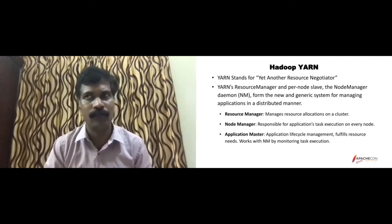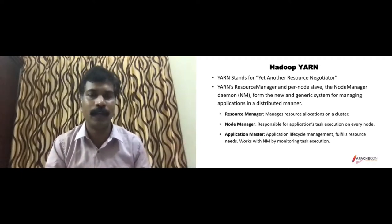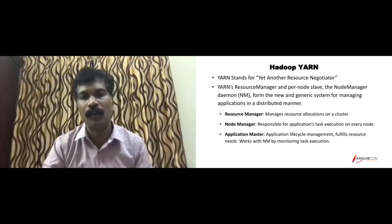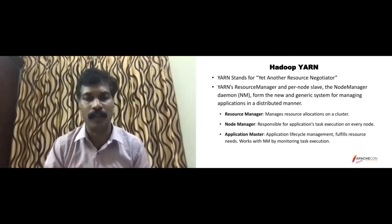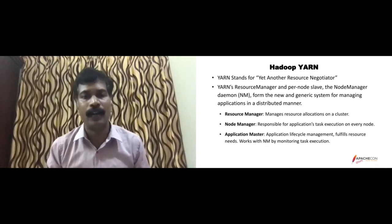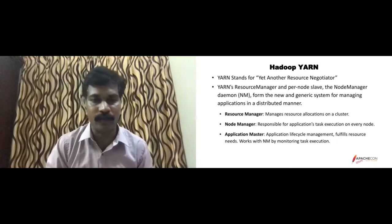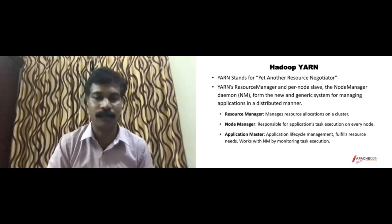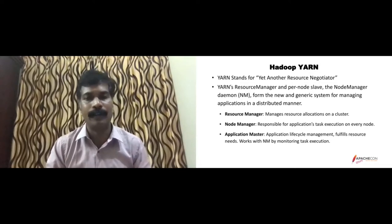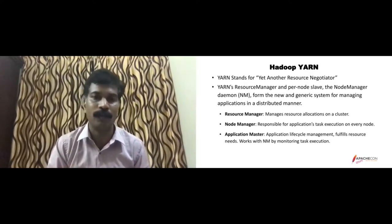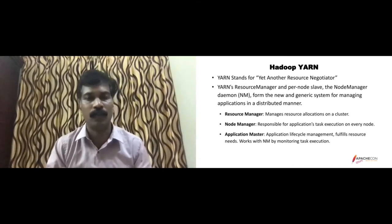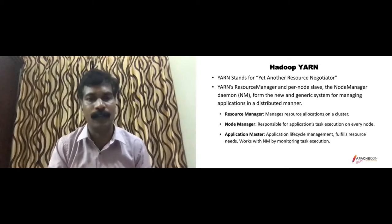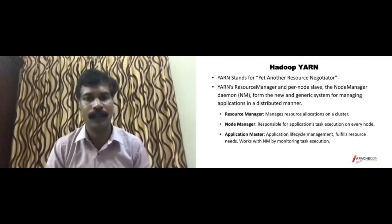Fundamentally, coming from a MapReduce model, in YARN we split the responsibility of resource management from application management. Hence the name Application Master, which controls the end-to-end lifecycle of an application. If you run a MapReduce job or a Spark job, there will be a specific Application Master for those jobs. It demands resources from the Resource Manager, gets the resources needed, and fulfills the entire workflow of how the job needs to be completed.